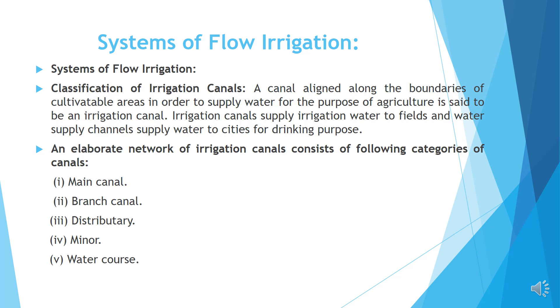Number one: main canal. Number two: branch canal. Number three: distributory. Number four: minor. Number five: watercourses.